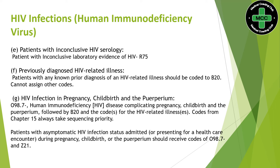For a patient with inconclusive HIV serology, where the lab results are inconclusive and they cannot decide whether the result is positive or negative, we will be assigning R75.